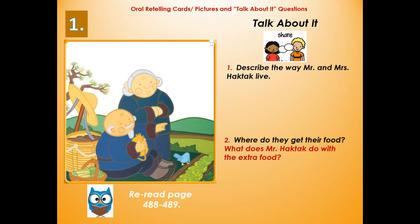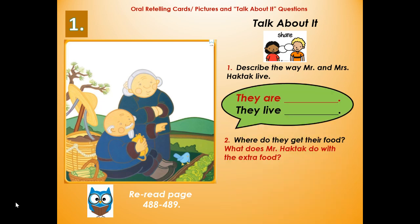Here's our first main event in the folk tale Two of Everything. If you were to re-read pages 488 to 489, you could find the answers to these two questions. Look closely at the picture — who is in the picture, where are they, and what is happening? The first question is: describe the way Mr. and Mrs. Hacktack live. You can say 'they are... and they live...' I remember from the folk tale, they are very simple, poor people and they live in the country.